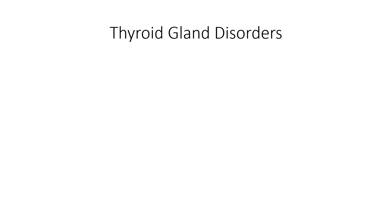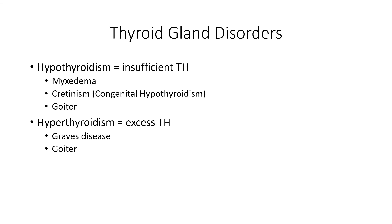Let's talk about a few thyroid gland disorders. First, we'll talk about hypothyroidism conditions, which come from an insufficient level of thyroid hormones. Myxedema, cretinism or congenital hypothyroidism, and goiter can be classified this way. We'll also talk about hyperthyroidism conditions, which result from excess thyroid hormones — Graves' disease typically falls here, and sometimes goiter falls here as well.